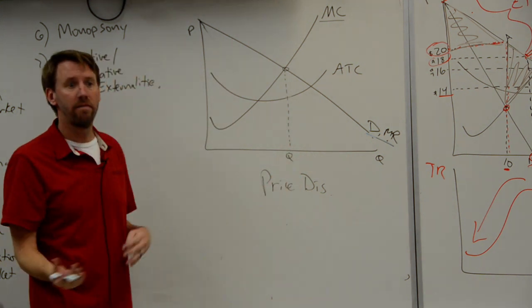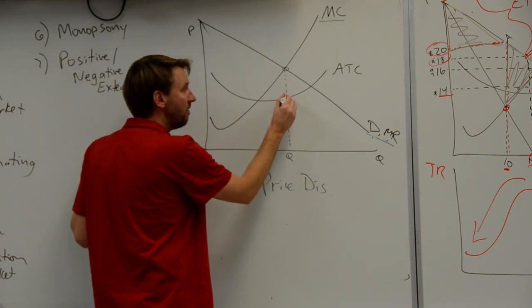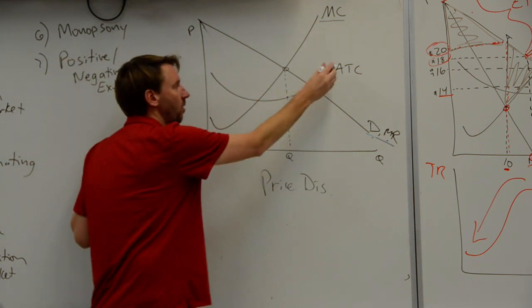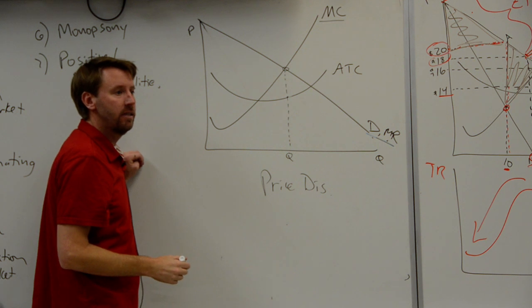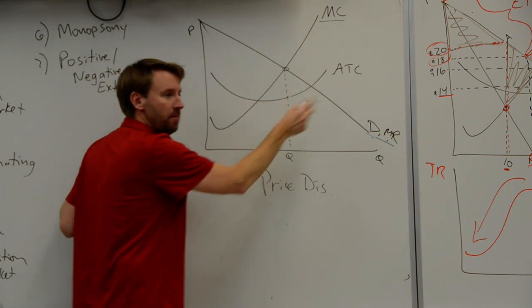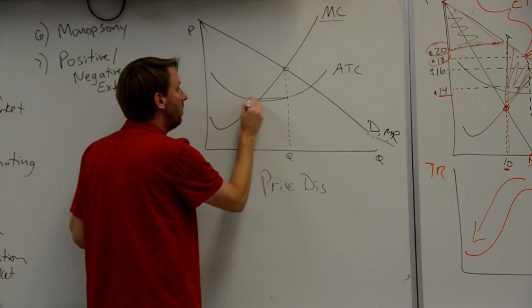Then you're going to try to find ATC. Average total cost. Why is the average total cost shaped the way it is? IMR or DMR. We were IMR, DMR. Then you go over to quantity. This is your price.